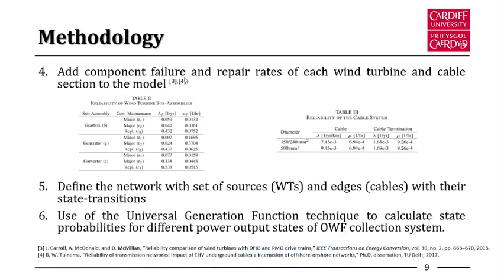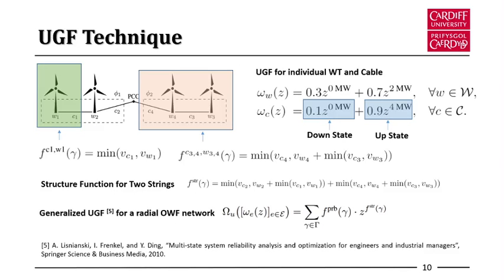Next, we add component subsystem failure and repair rates to the model. This model is based on directed graphs with wind turbines represented as a set of sources and cables represented as a set of edges. Using the technique called Universal Generation Function, we can calculate the state probabilities for different power output states of the offshore wind farm collection system. A brief summary of the UGF technique is provided, and more information can be found in the referenced literature.